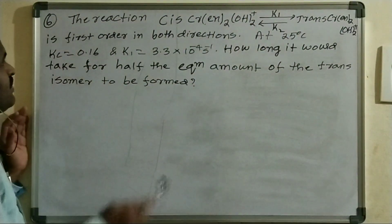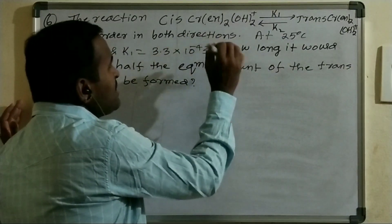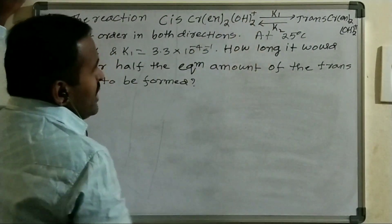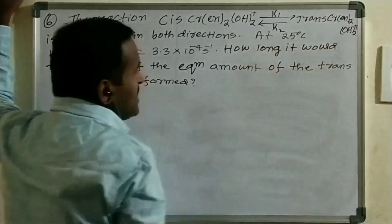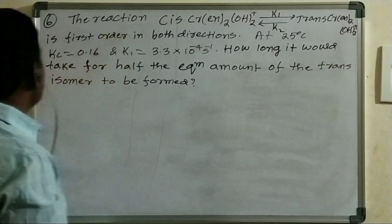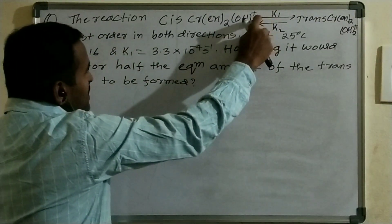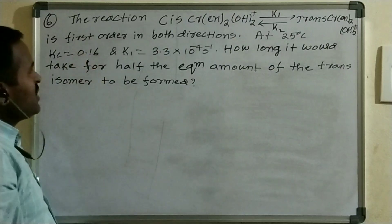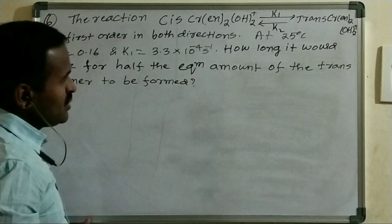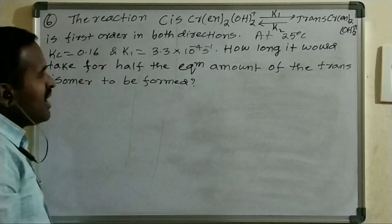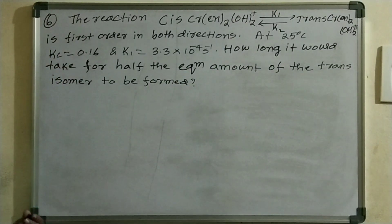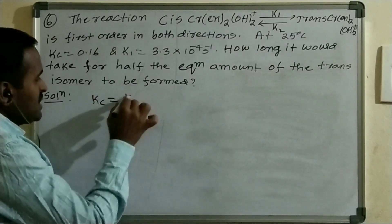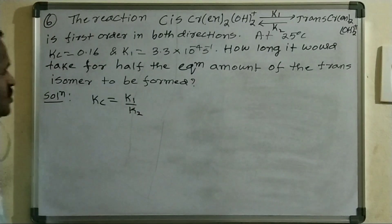Next question: The reaction cis-[Cr(en)2(OH)2]⁺ ⇌ trans-[Cr(en)2(OH)2]⁺ (where en = ethylenediamine). Rate constant K1 for forward and K2 for backward, both first order. At 25°C, K_eq = 0.16 and K1 = 3.3×10⁻⁴ s⁻¹. How long will it take for half of the equilibrium amount of the trans isomer to be formed? K_eq = K1/K2, so K2 = K1/K_eq.